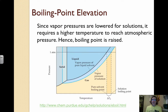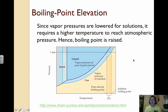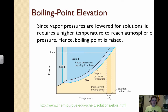Since vapor pressures are lowered, a higher temperature is required to reach atmospheric pressure, so the boiling point is raised. The vapor pressure of the solution is lower than that of the pure solvent, meaning the temperature must be higher to hit atmospheric pressure. Interestingly, when you add salt to water, the salt is the solute and it raises the boiling point — it doesn't make food cook faster at all. Adding salt to water only raises the boiling point; you add salt just to flavor the water.